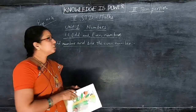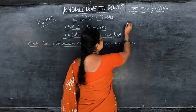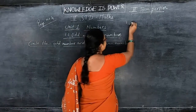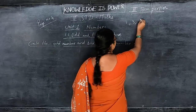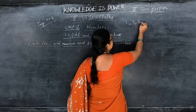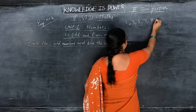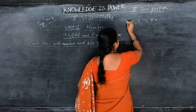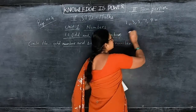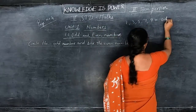Odd number means what, children? See here, in 1's place: 1, 3, 5, 7, and 9. If any of these numbers comes in the 1's place, it is an odd number.